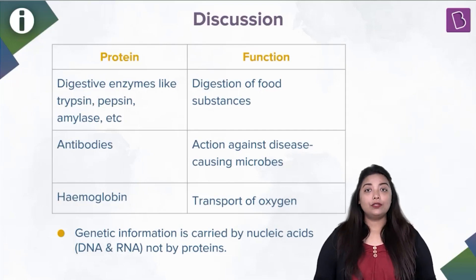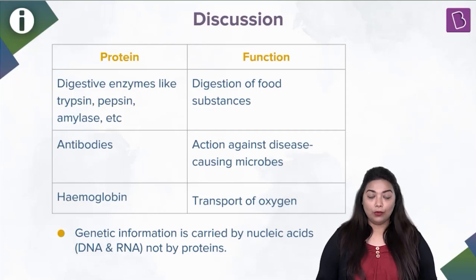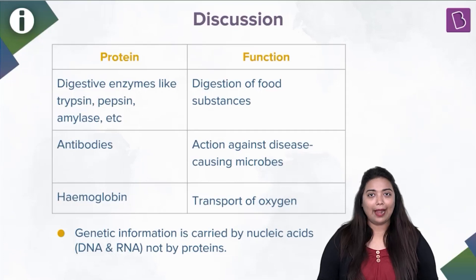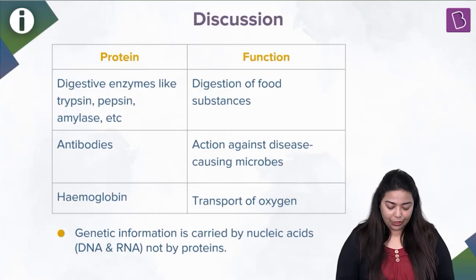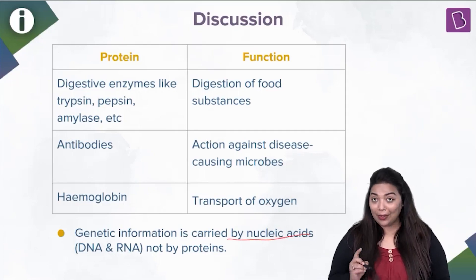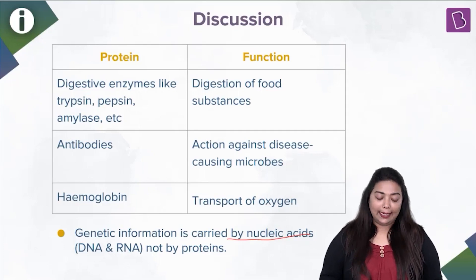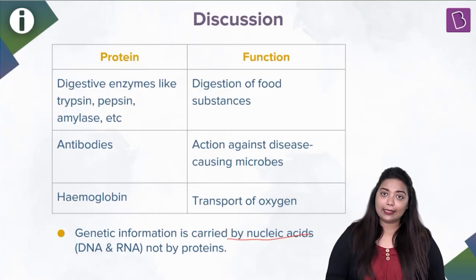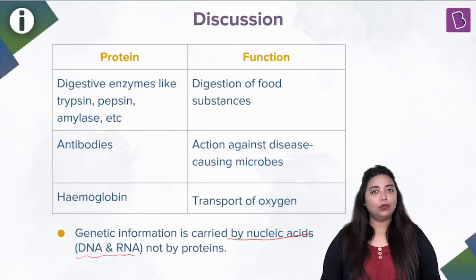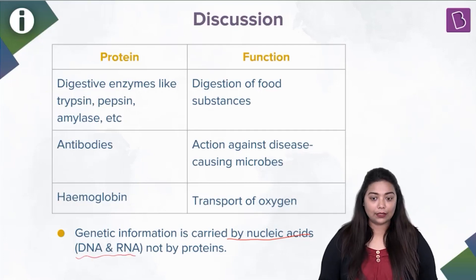Hemoglobin is involved in the transport of oxygen and has protein. Genetic information is carried by nucleic acids — not proteins. These nucleic acids are seen as DNA and RNA, not proteins.